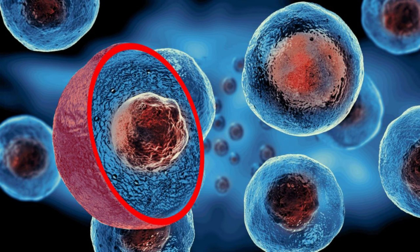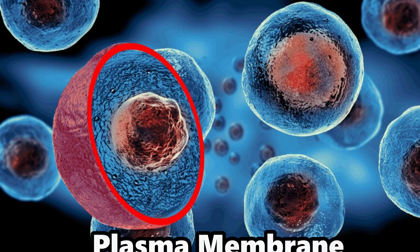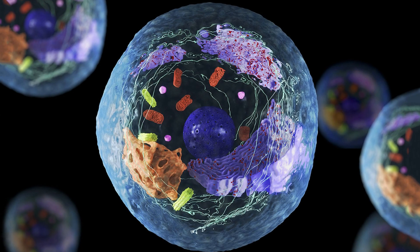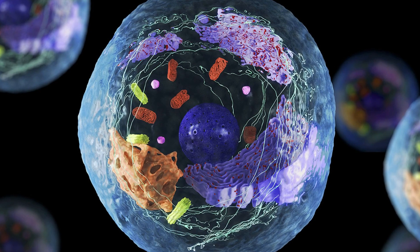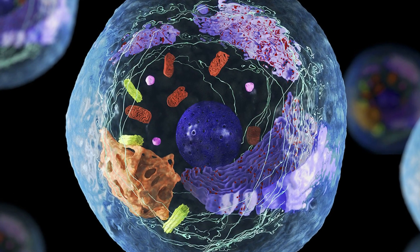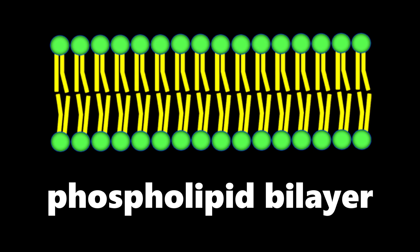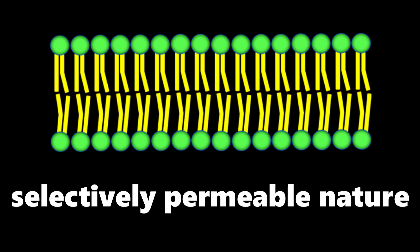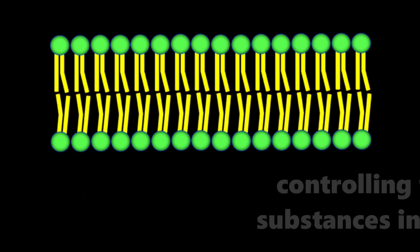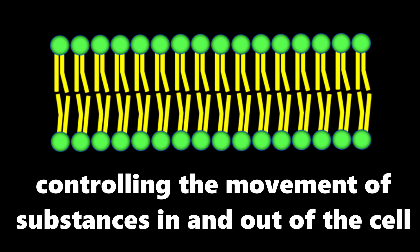The cell membrane, also known as the plasma membrane, is an essential component of all cells. It serves as a protective barrier separating the internal environment of the cell from the external surroundings. Composed of a phospholipid bilayer, the cell membrane exhibits a selectively permeable nature, controlling the movement of substances in and out of the cell.